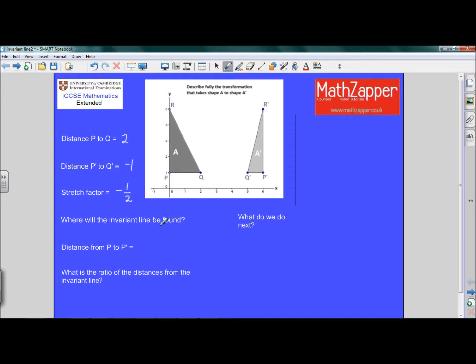Where will the invariant line be found? The invariant line will be found somewhere between P and P dash. It will equally be found somewhere between Q and Q dash, and also somewhere between R and R dash. It doesn't matter which letters we choose, we will get the same invariant line. But we're going to use P and P dash.